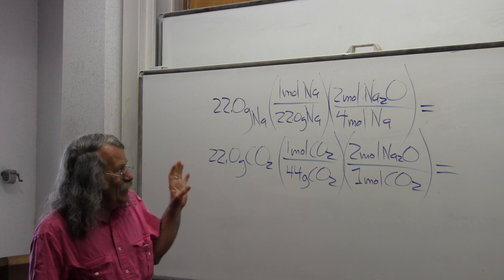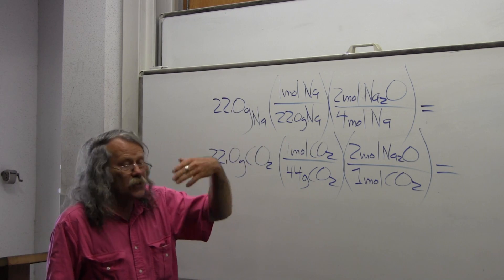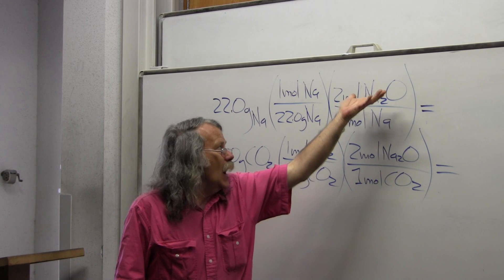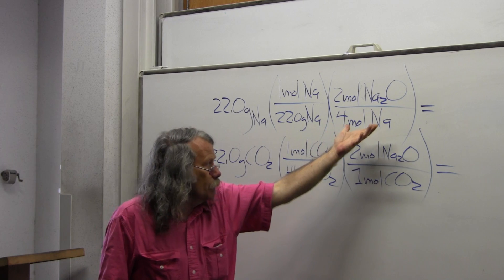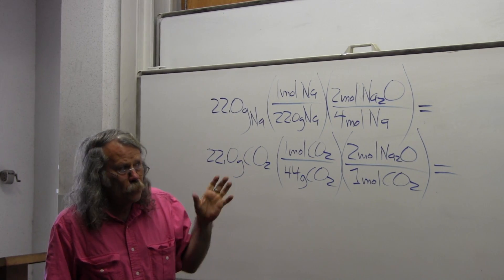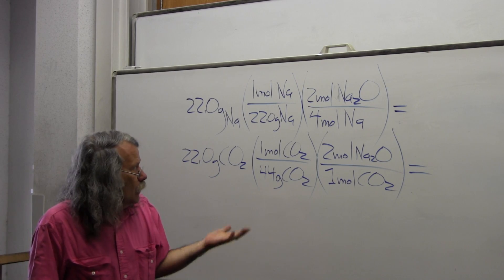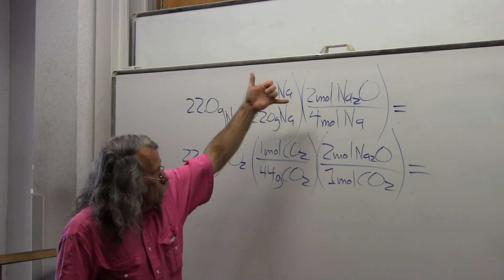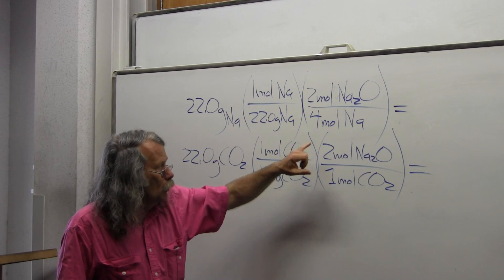Then I have to ask: how much sodium oxide is produced for every mole of sodium? That's where we use the information from the balanced equation. I use the mole ratio: two moles of sodium oxide are produced for every four moles of sodium.